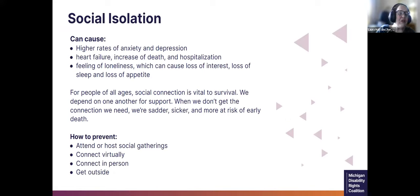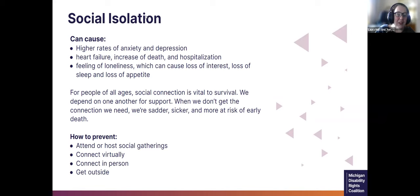Getting into the area of social isolation: social isolation can cause higher rates of anxiety and depression; can be a factor related to heart failure, increased risk of death and hospitalization; and can cause feelings of loneliness, loss of interest, loss of sleep, and loss of appetite. Social connection is vital to our survival — we depend on one another for support. If we don't have that, we get sadder, sicker, and more at risk of early death. Things shown to help prevent that include attending or hosting social gatherings, connecting virtually, connecting in person, and getting outside. We'll show some AT for all of those things today.